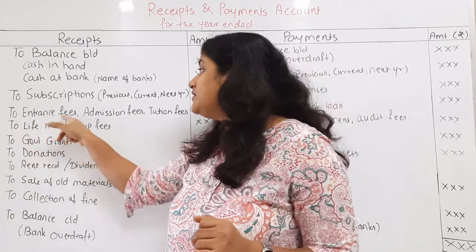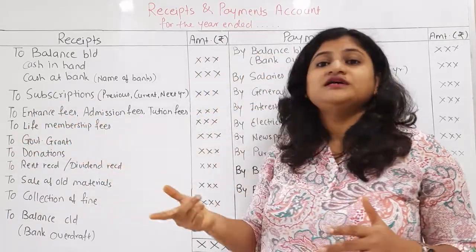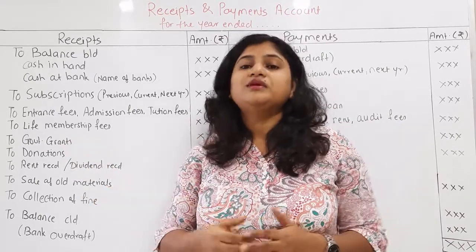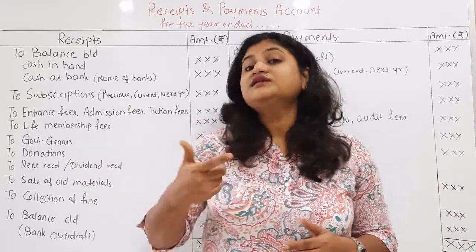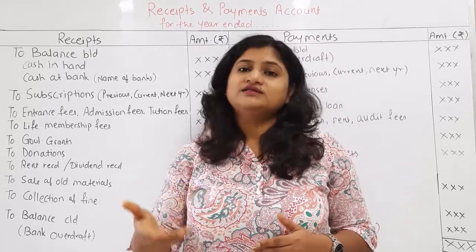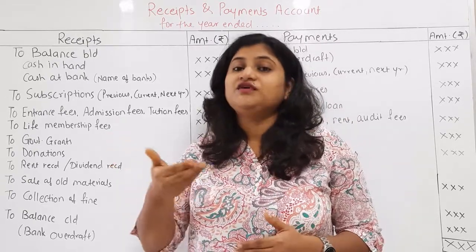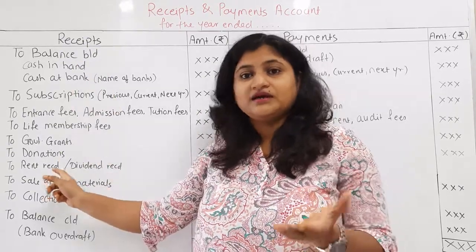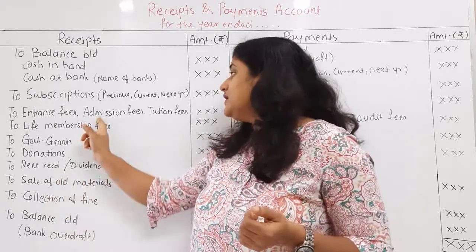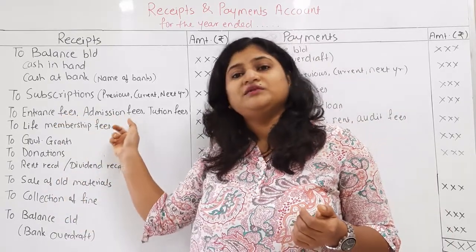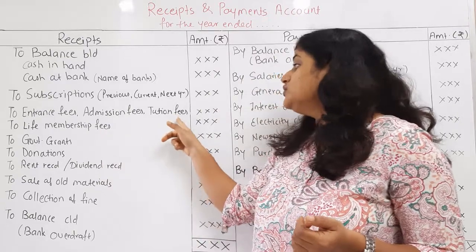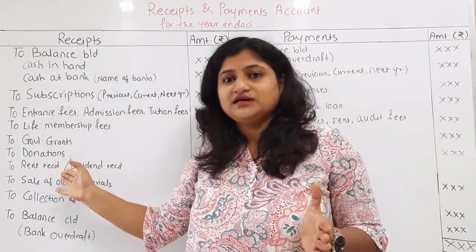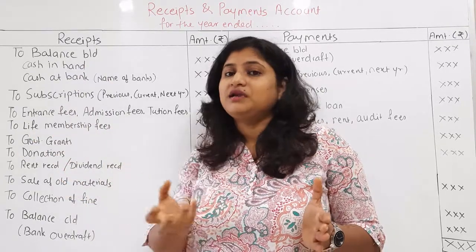Next: entrance fees. Suppose you have an NPO — a not-for-profit organization — and someone enters the group by filling up a form and paying a specific entrance fee. The admission fee and entrance fee are the same thing. Similarly, tuition fees are also a receipt — fees through which you can receive income. The cash received from such fees is a receipt.